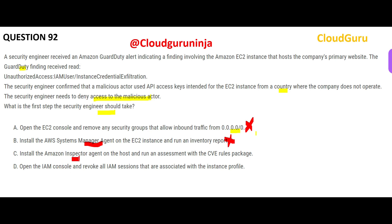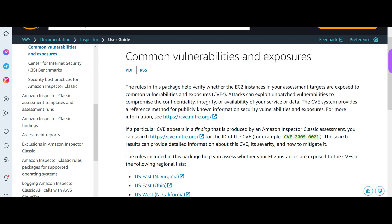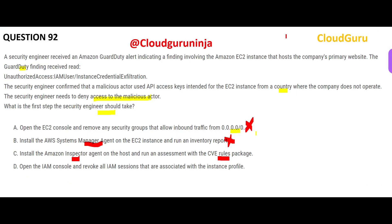Option C says to install the Inspector agent and run a CVE assessment. CVE means Common Vulnerability and Exposure — it can tell you if your EC2 instance got exposed. But the question already confirmed there is a malicious actor — we already know that. So there is no need to run CVE assessment again to discover what we already know. Option D is the only option remaining that can be the answer.